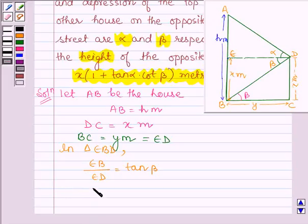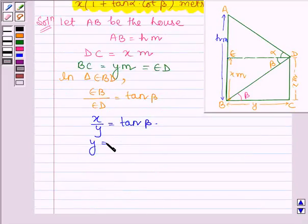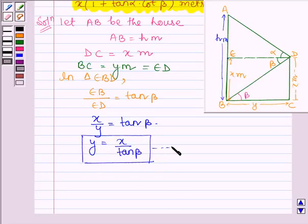So, from here we have x divided by y is equal to tan beta which further implies that y is equal to x divided by tan beta. Let us denote this by equation number 1.